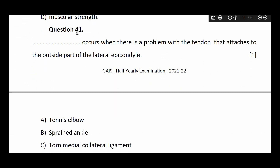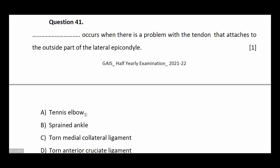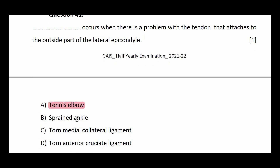Question number forty-one: blank occurs when there is a problem with the tendon that attaches to the outside part of the lateral epicondyle. Options: tennis elbow, strained ankle, torn medial collateral ligament, torn anterior cruciate ligament. The answer is tennis elbow.